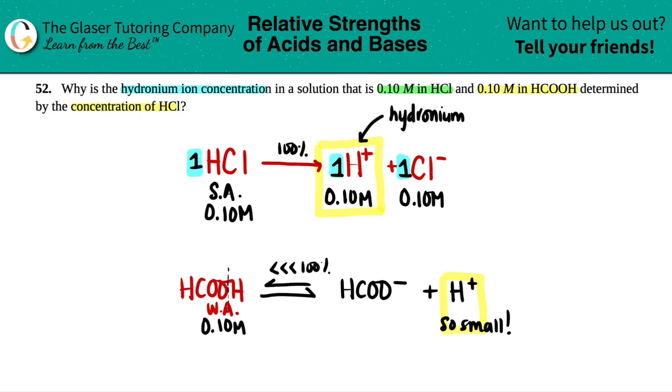And that's why the hydronium ion concentration is only determined by the concentration of HCl. Because HCl is a strong acid, it dissociates 100%, so we know that number. But for this one, since the dissociation is so small, it doesn't matter. So it's negligible.